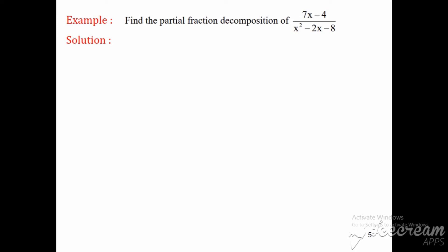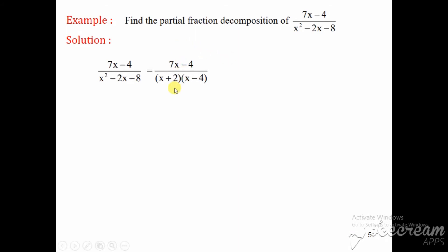We need to find the partial fraction decomposition of (7x - 4) / (x² - 2x - 8). First, we check the criteria: the degree of the numerator is 1 and the degree of the denominator is 2, so the degree of the numerator is less than the degree of the denominator — therefore, partial fraction decomposition is possible. We now factorize the denominator: x² - 2x - 8 = (x + 2)(x - 4). Further factorization is not possible.